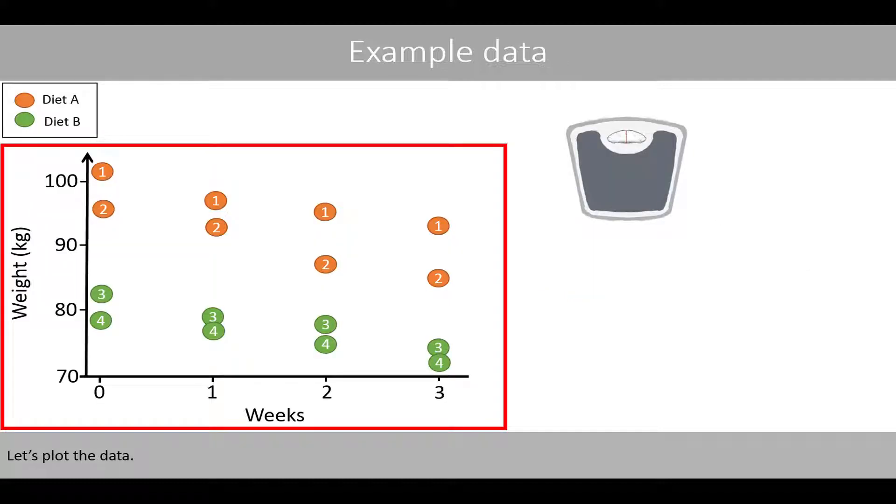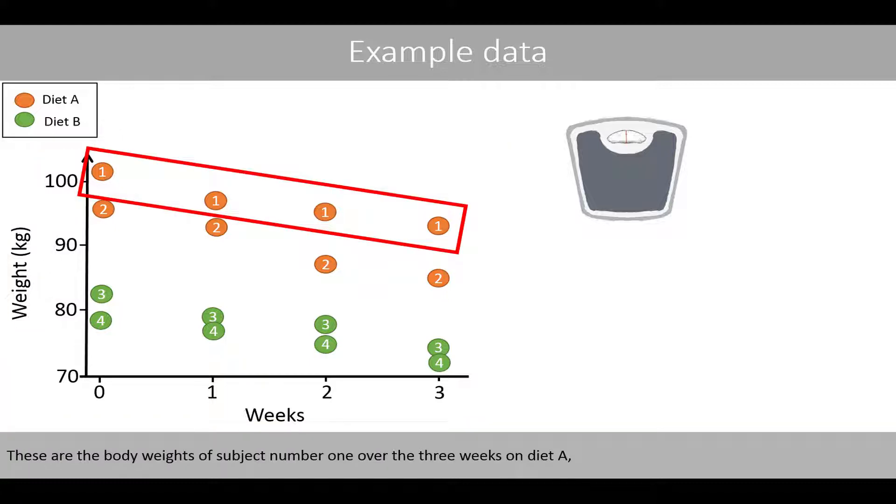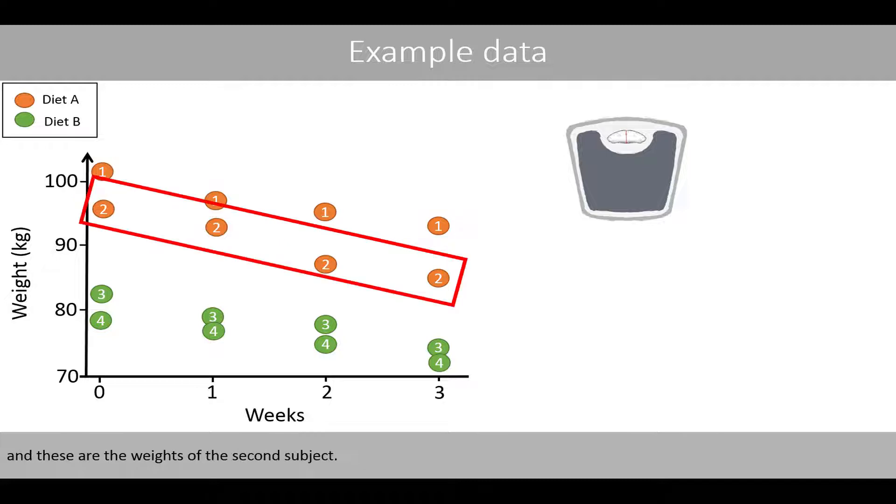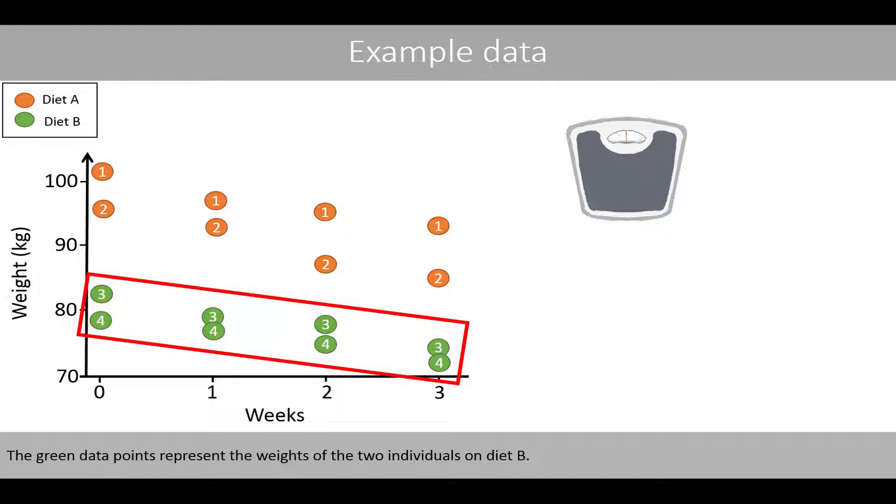Let's plot the data. These are the body weights of subject number one over the three weeks on diet A, and these are the weights of the second subject. The green data points represent the weights of the two individuals on diet B.